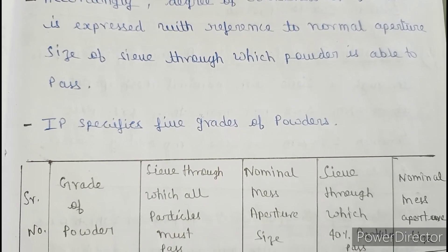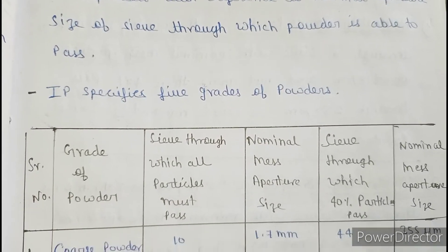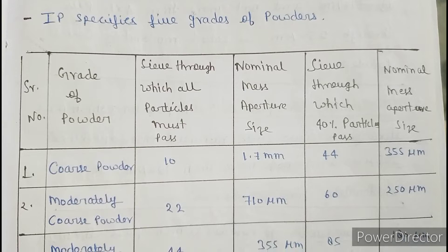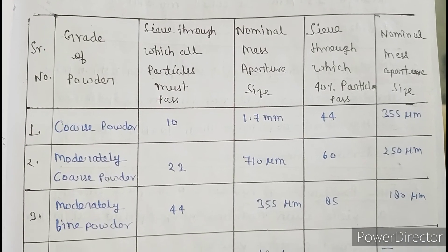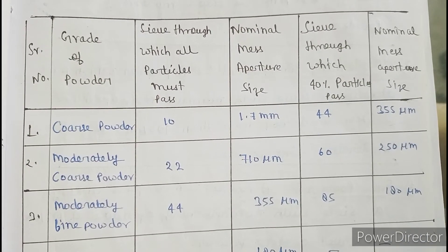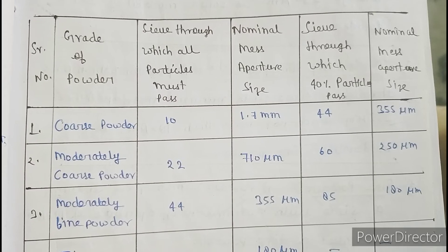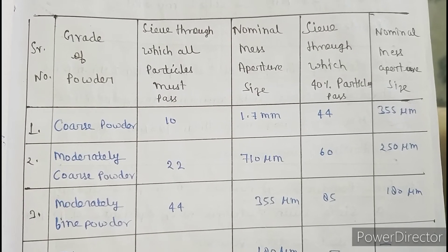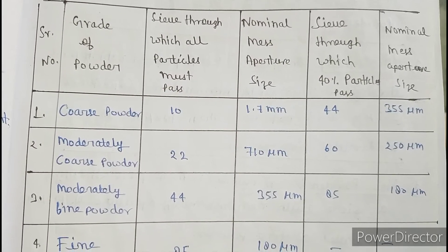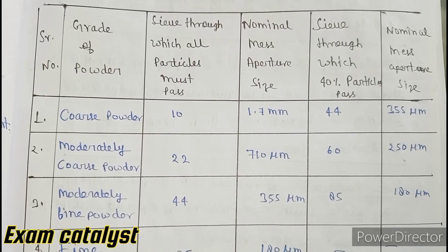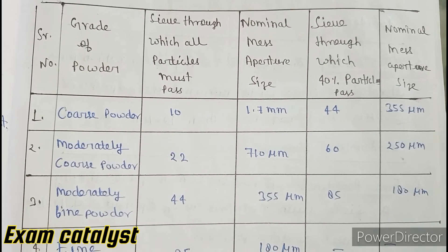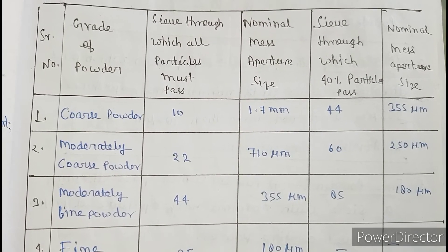IP, that is Indian Pharmacopoeia, specifies five grades of powder: coarse powder, moderate powder, moderately fine powder, fine powder, and very fine powder. There is a given sieve through which all particles must pass, and a nominal mesh aperture size sieve through which 40% of particles pass.